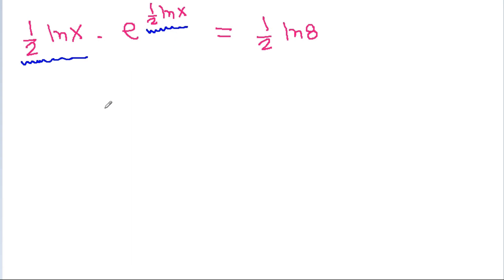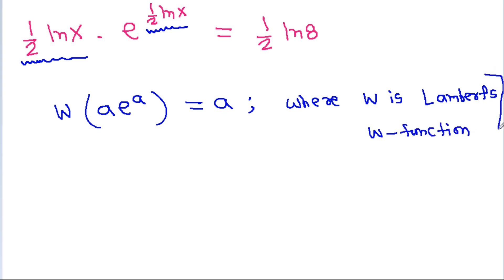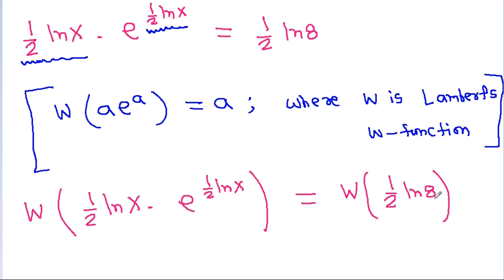If we have a times e power a, then W of a times e power a is equal to a, where W is the Lambert W function. So here if we apply the Lambert W function to both sides, we get W of 1 by 2 ln x times e power 1 by 2 ln x equals W of 1 by 2 ln 8. This gives us 1 by 2 ln x equal to W of 1 by 2 ln 8.